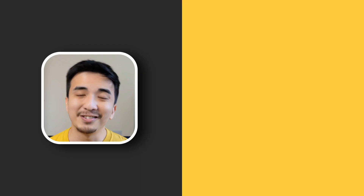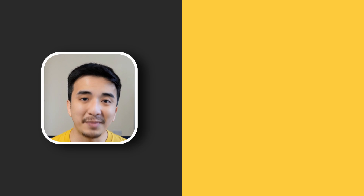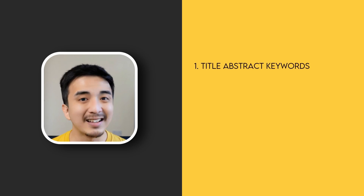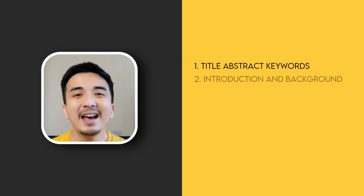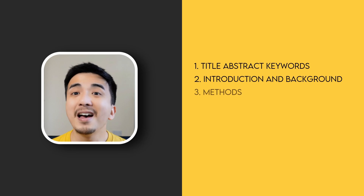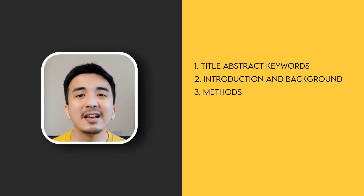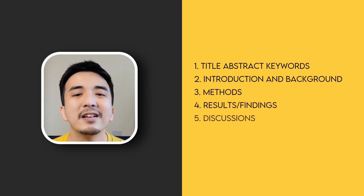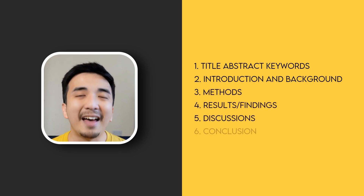To a certain extent, the same also applies to literature reviews, scoping reviews, and systematic review articles. The key sections of a research paper are Title, Abstract and Keywords, Introduction and Background, Methods, Results and Findings, Discussions, and finally Conclusions. Each of these sections are valuable but for very different reasons.